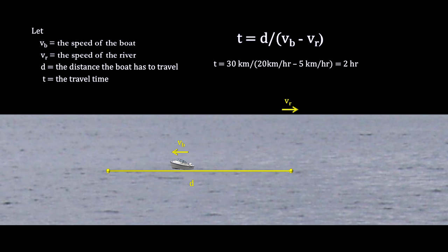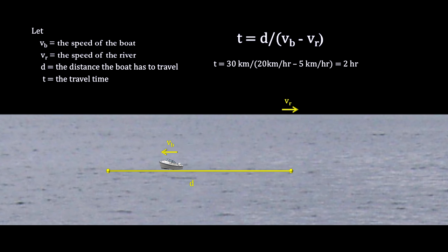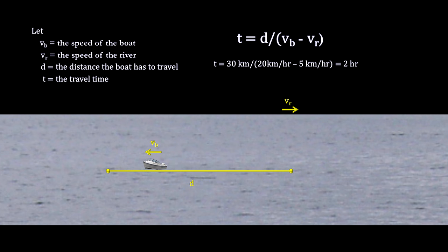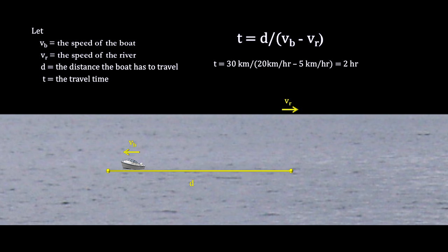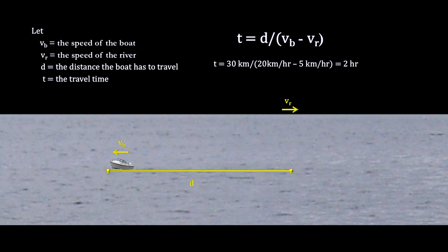If the distance is 30 kilometers, and the boat is running at 20 kilometers per hour, and the current working against it is 5 kilometers per hour, we see that the trip home will take 2 hours.